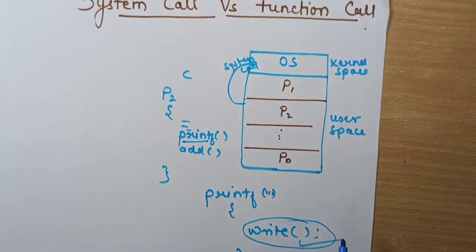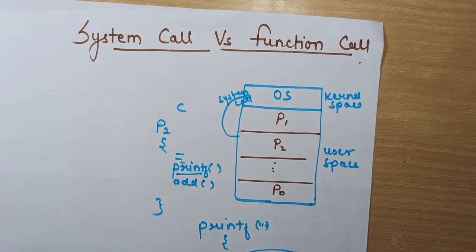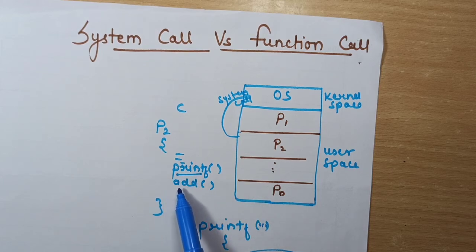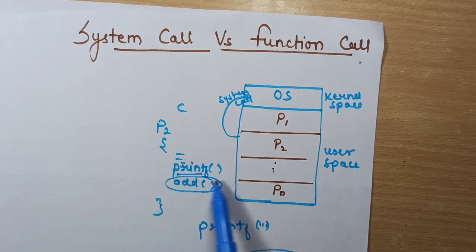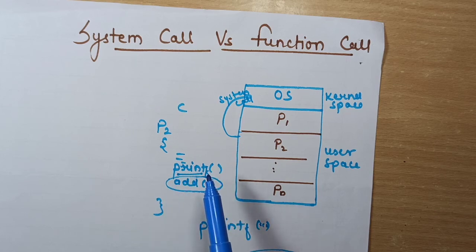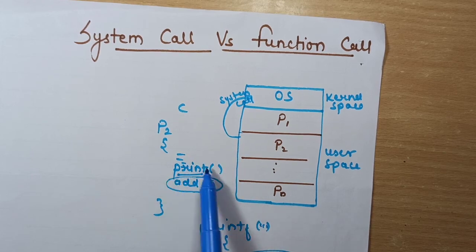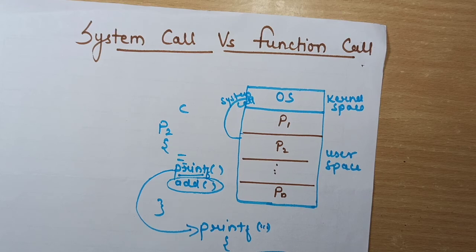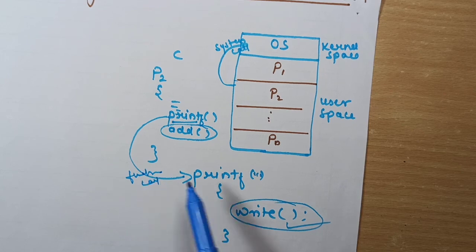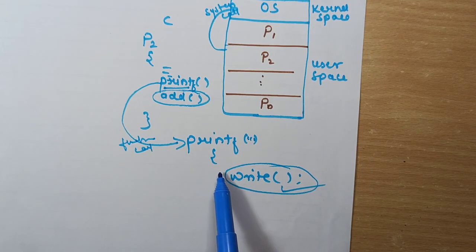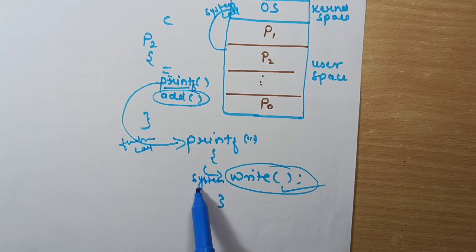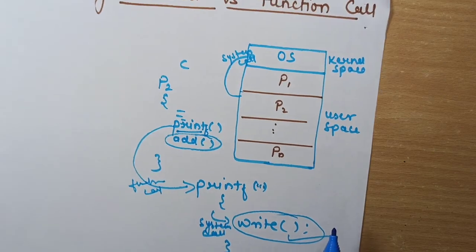So I hope you have understood the difference between system call and function call. A function call can be a simple function created by the user inside any programming language — it can be a built-in function, a user-defined function, or a library function defined inside a library. But whenever you call printf, it calls the defined function inside the C library — this is a function call. Whenever you want to access any peripheral devices, you need to ask the operating system, and for that you need a system call.